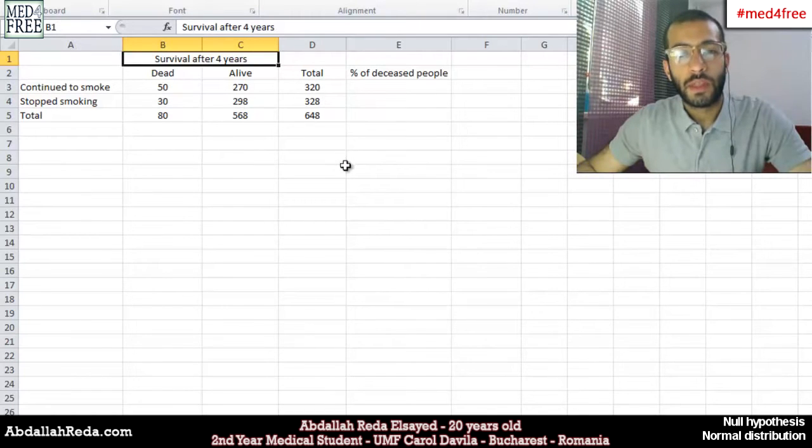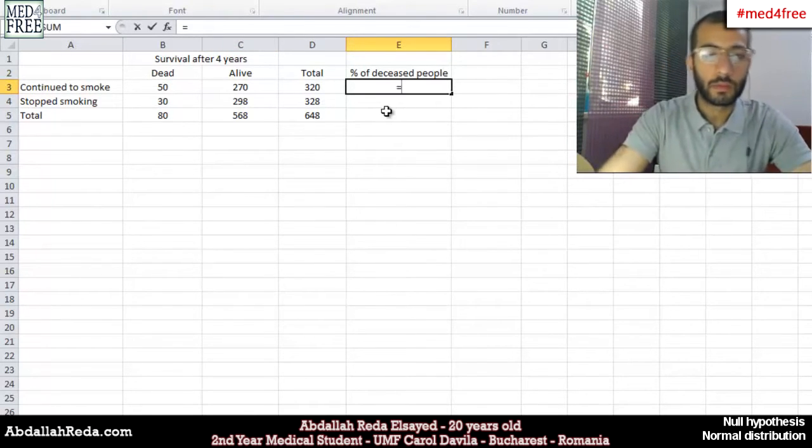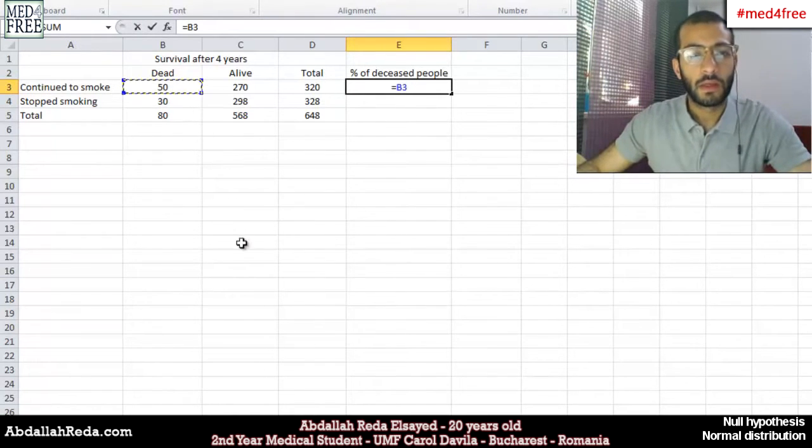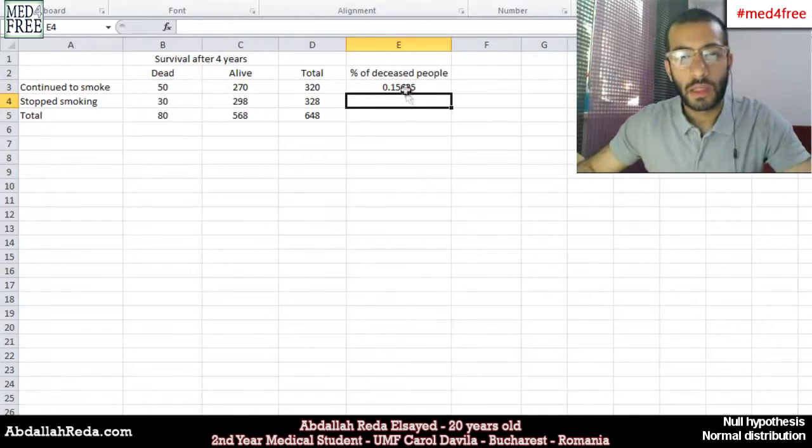So the very first thing that we need to do is that we want to specify the percentage of the people who were deceased by smoking. And in order to do that, we select the cell, write equal and we get this value and we divide it by that one here. And we're going to get it in decimals.